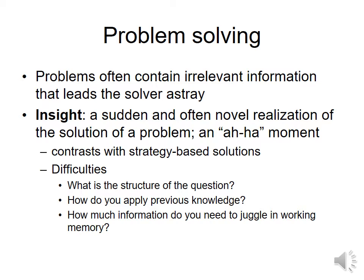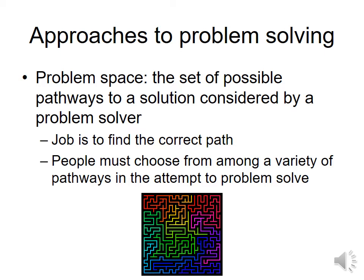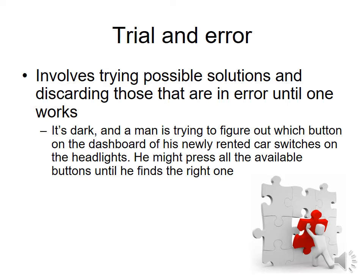There are different approaches to problem solving. Some problems require our ability to consider pathways and use of space — a maze is an example. Trial and error means trying all possible solutions and discarding them until a correct one works. This isn't always algorithmic because it may not be methodical — like pushing every button and turning every dial on a rental car until the headlights turn on.